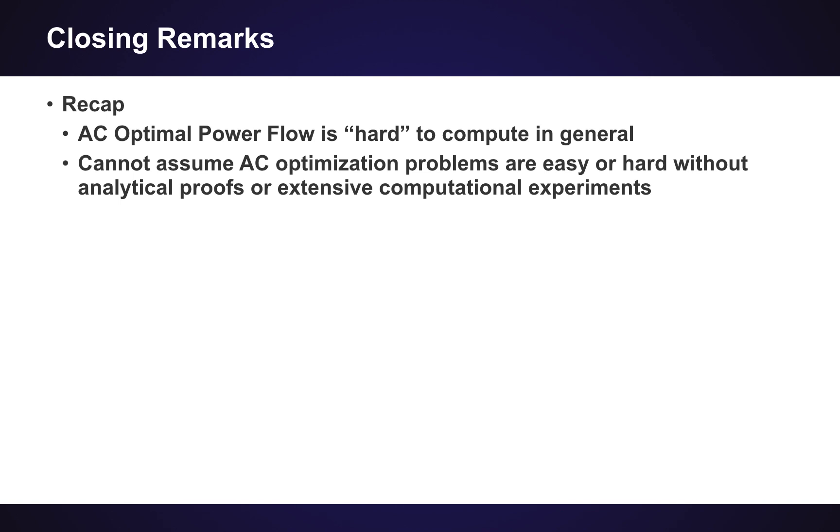So then I should maybe try and say what I am taking from this as the power systems person in the room. To recap, what Carlton has told us here is that there are these different classes of problems and that actually the AC optimal power flow is really hard to compute in general. You could find a really bad set of inputs that would make this problem really hard. What is the takeaway for us as power engineers, or really for anyone, is that we cannot really assume that the AC optimization problems are easy or hard without providing analytical proofs or really very extensive computational experiments.